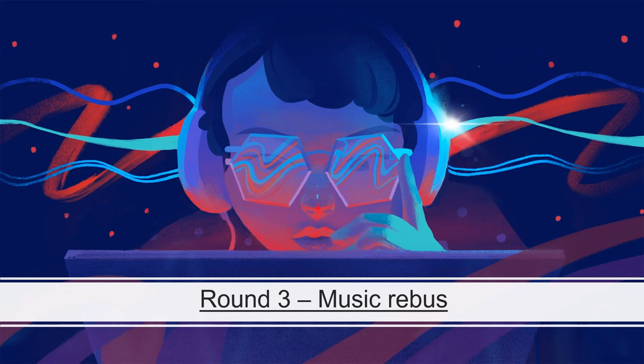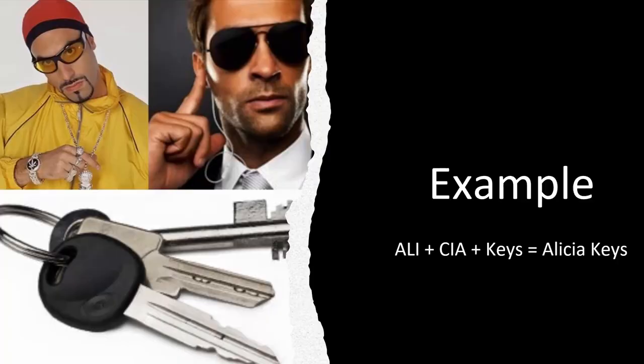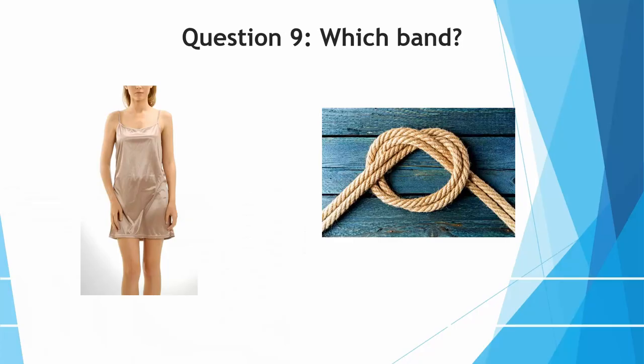Moving on to round three, the music rebus round. We combine different images to form the name of a band or artist — for example, Ali G with CIA and keys becomes Alicia Keys. So starting off: which band is this? And the answer is Slipknot, of course.